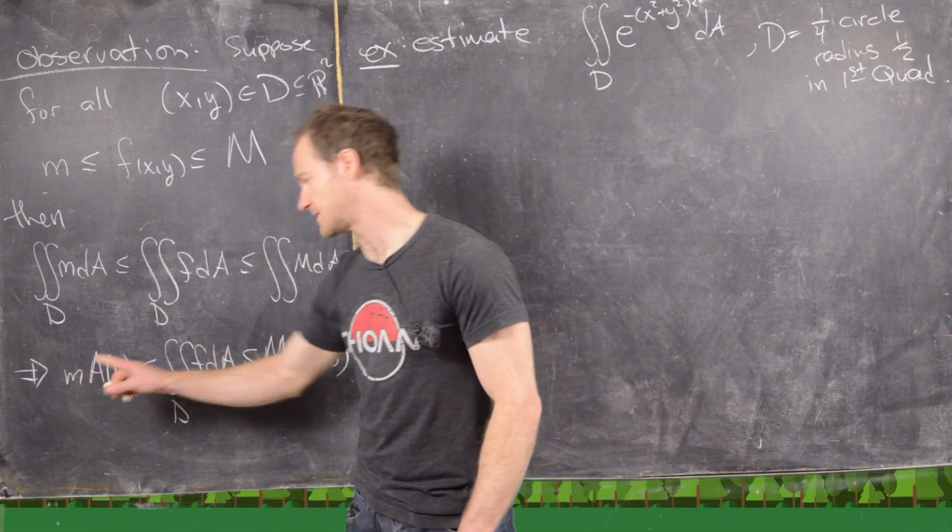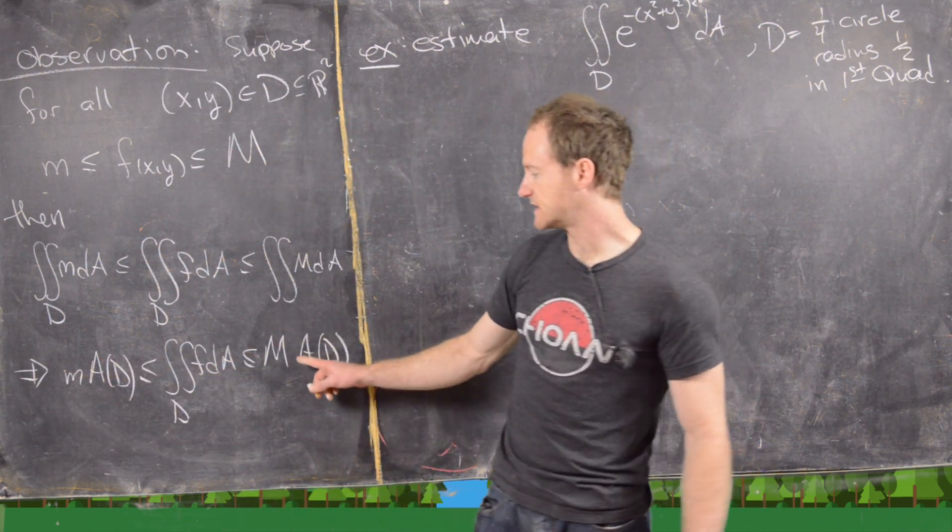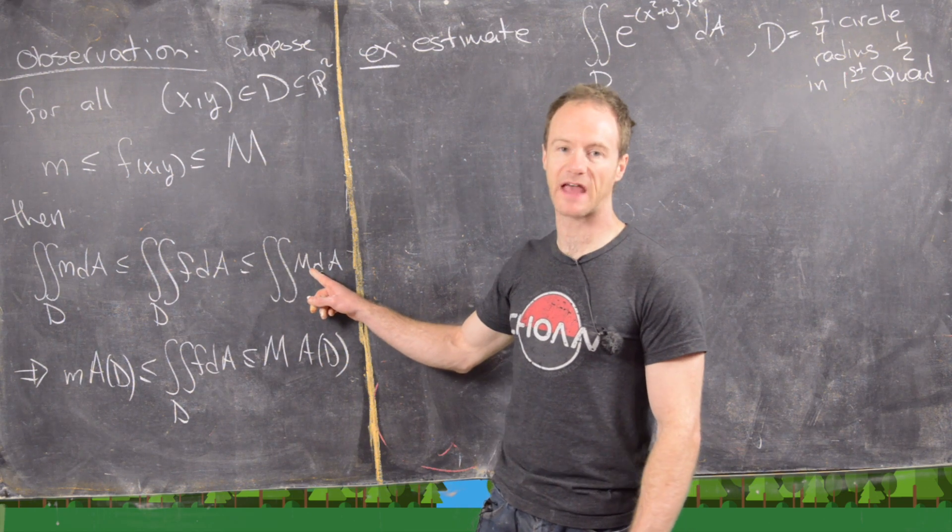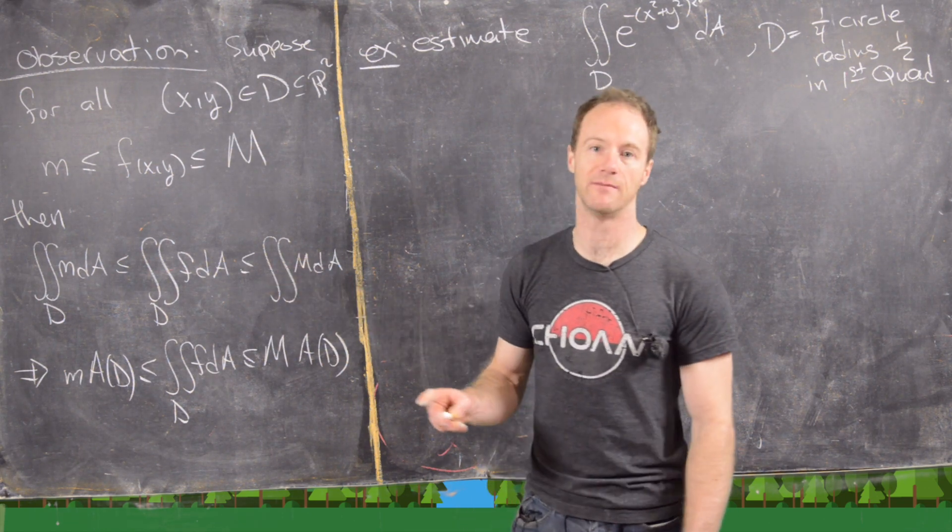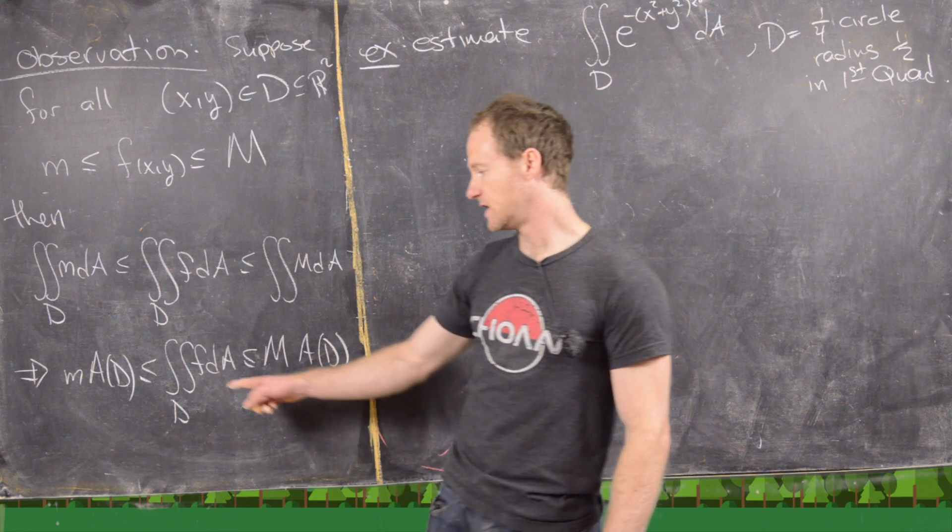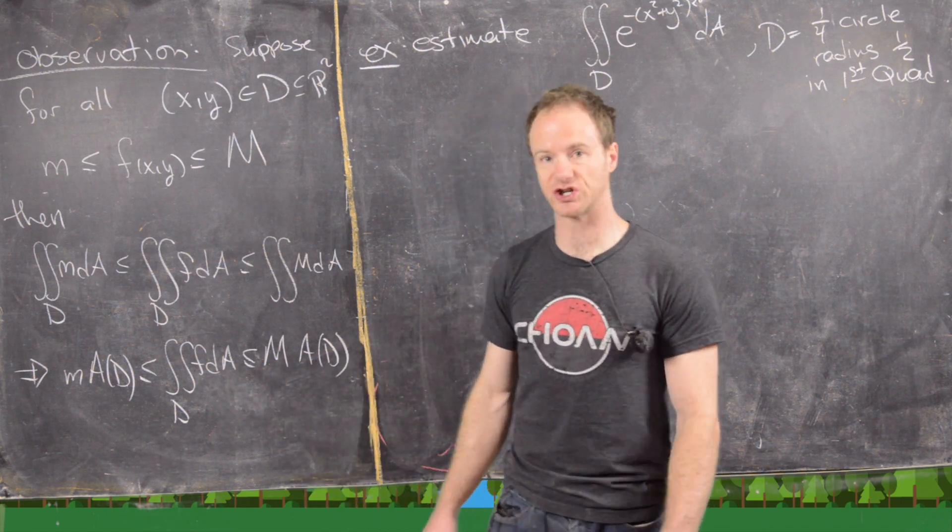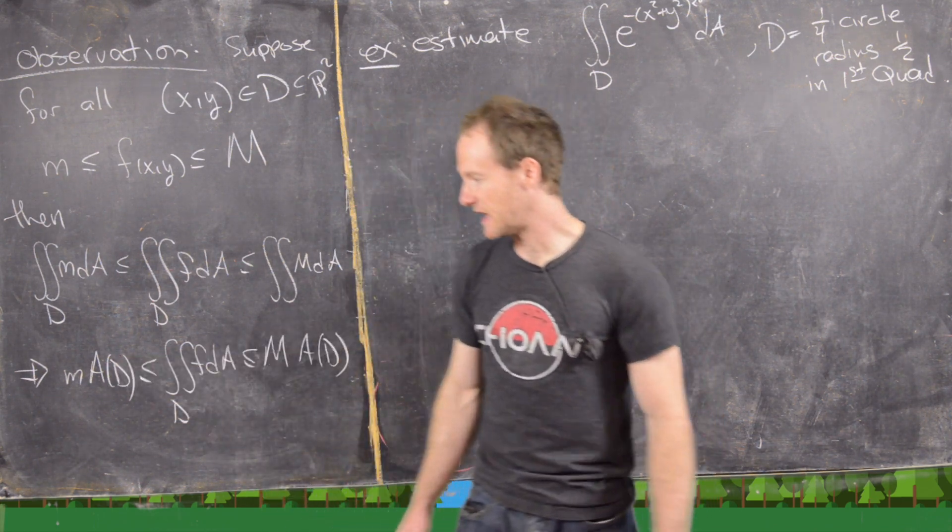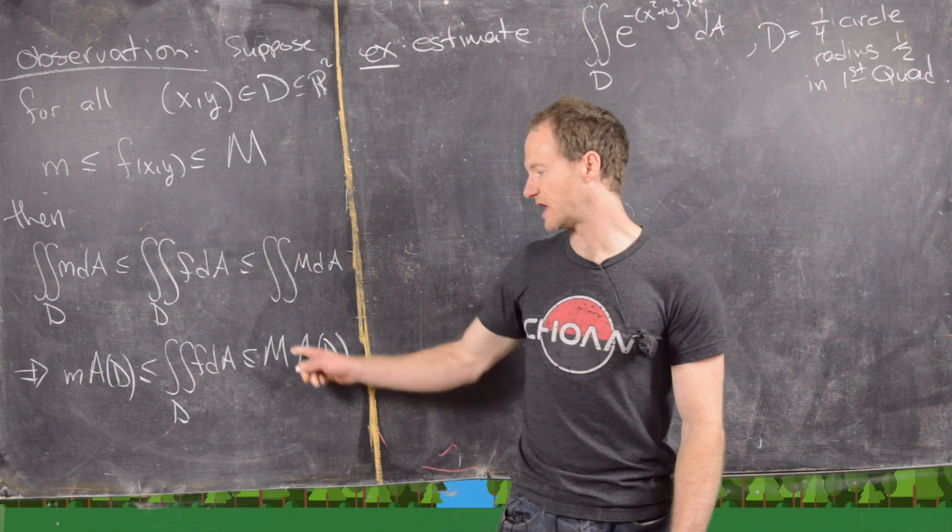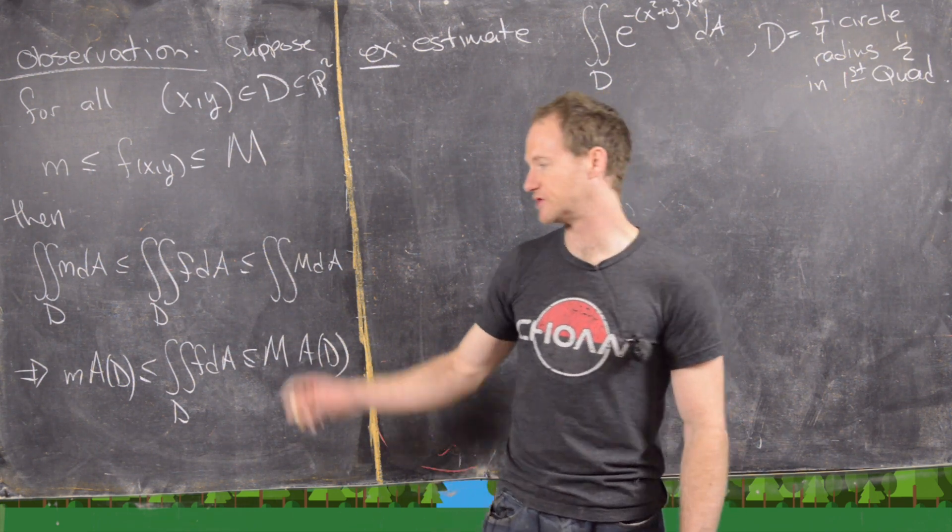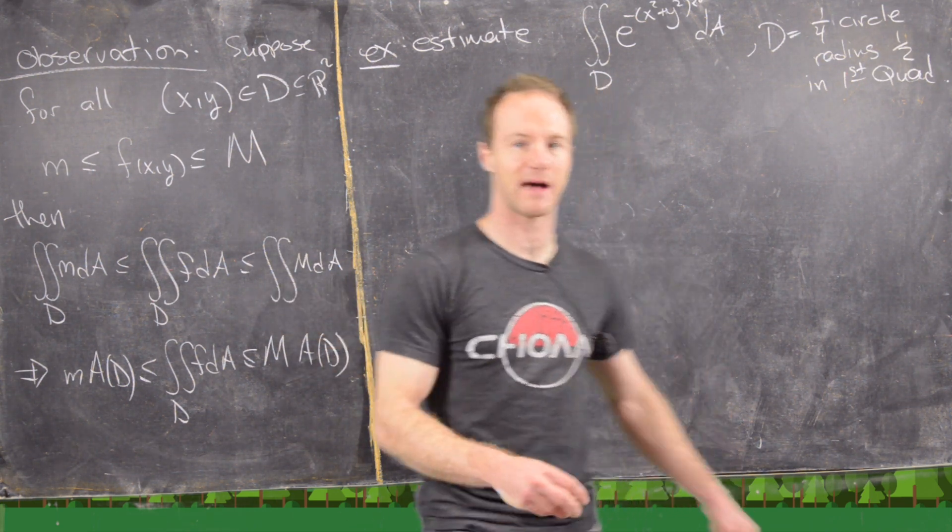And then same thing up here, the double integral of capital M. We can bring the capital M out, and then we just get the area of the region again. So that means the double integral of our function is bound between m times the area of the region and capital M times the area of the region, where that's like our minimum and that's our maximum.